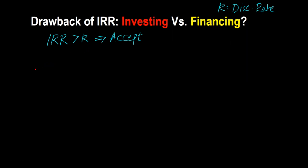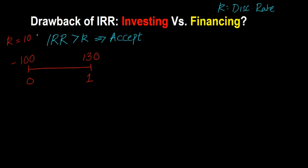Let me explain using a very simple example. First, consider this situation: suppose there is a project in which you spend $100 today and in one year's time you get $130 back. Your discount rate K is 10% — in other words, the next best thing you can do is get 10% elsewhere. If I ask you would you invest based on the IRR rule, you'd first find the IRR. You can probably see that the IRR here is 30% because you're making a 30% return.